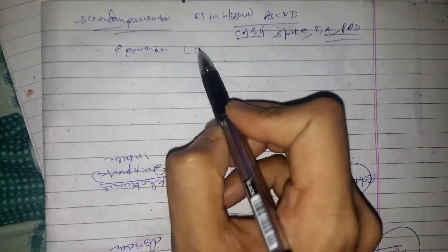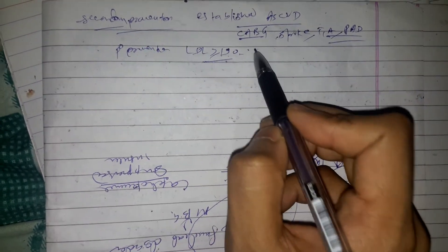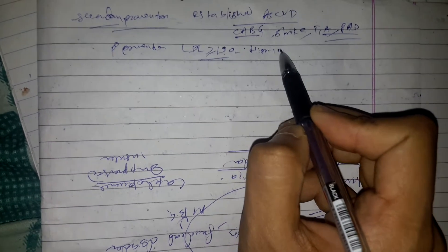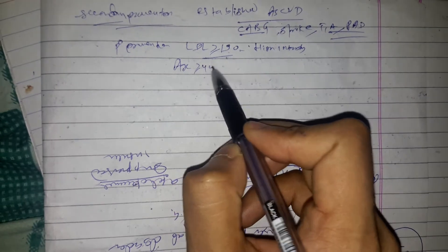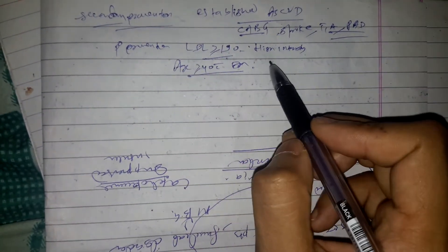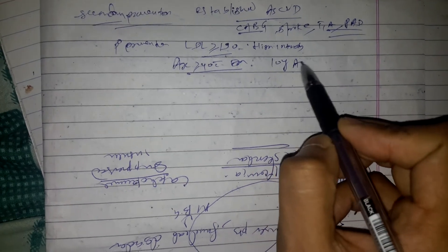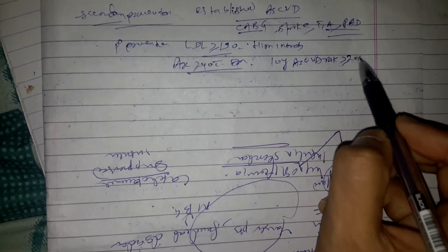For primary prevention, when LDL is 190 or greater, we give high intensity statin. If age is 40 or more with diabetes mellitus, and 10-year ASCVD risk is 20% or more, then we give high intensity statin.